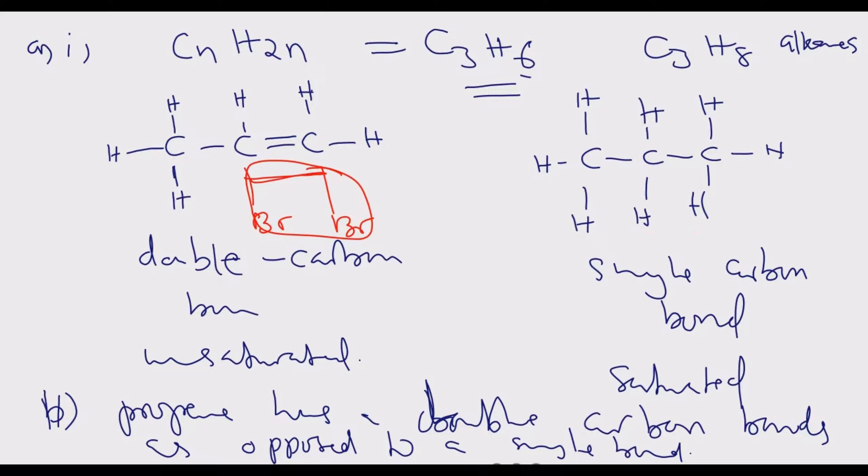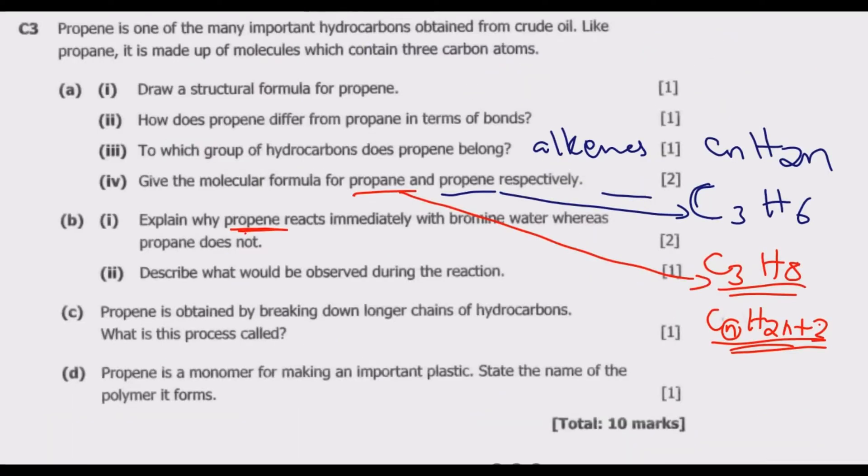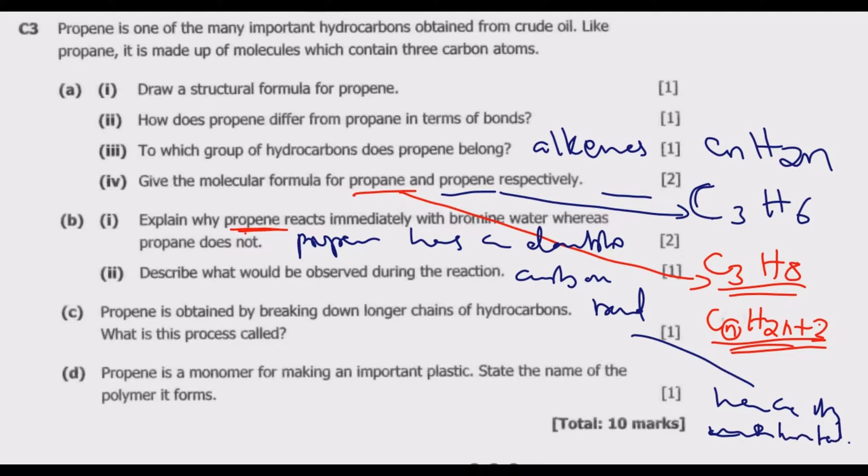Because propene has a double carbon bond, hence it is an unsaturated compound, meaning you can add additional elements. You can do that through the process known as bromination or hydrohalogenation, where you break that double bond by adding an additional hydrogen to form larger molecules of alkanes.